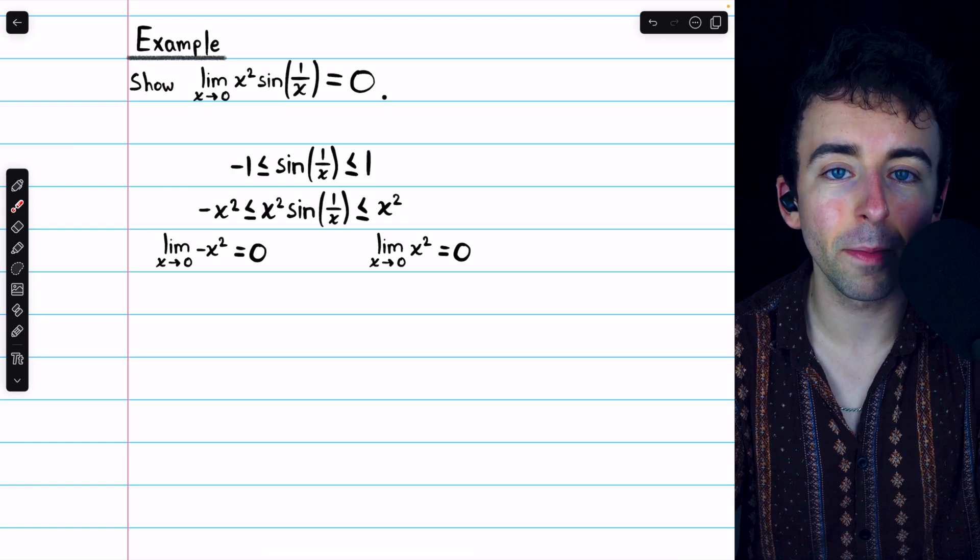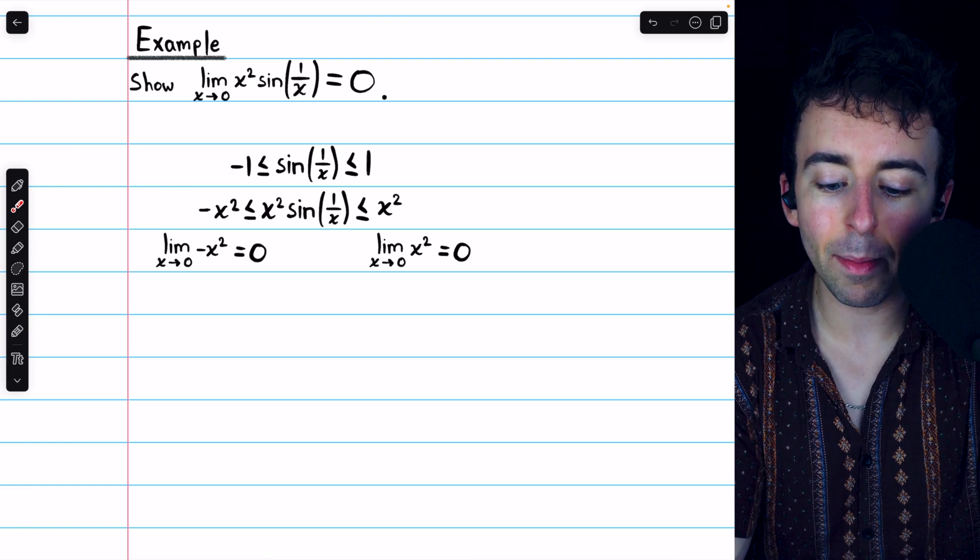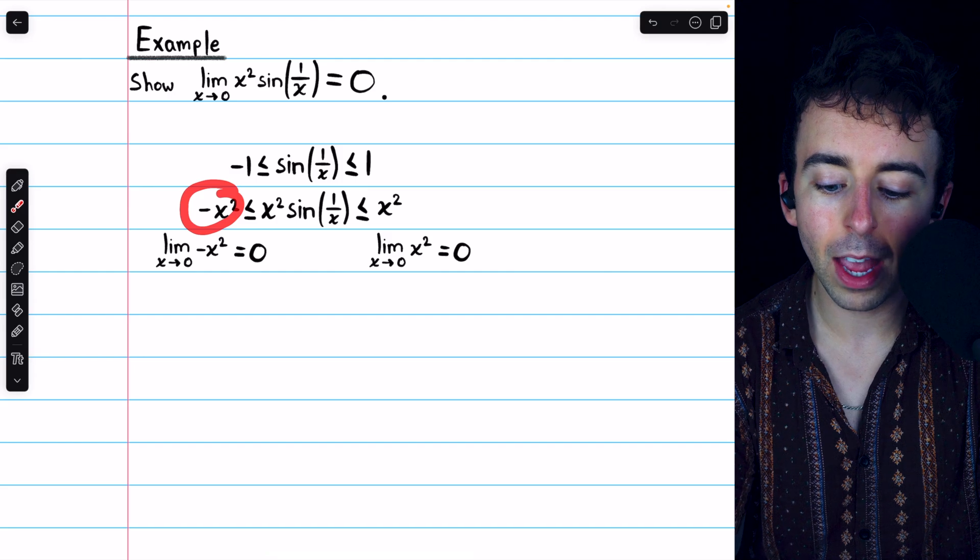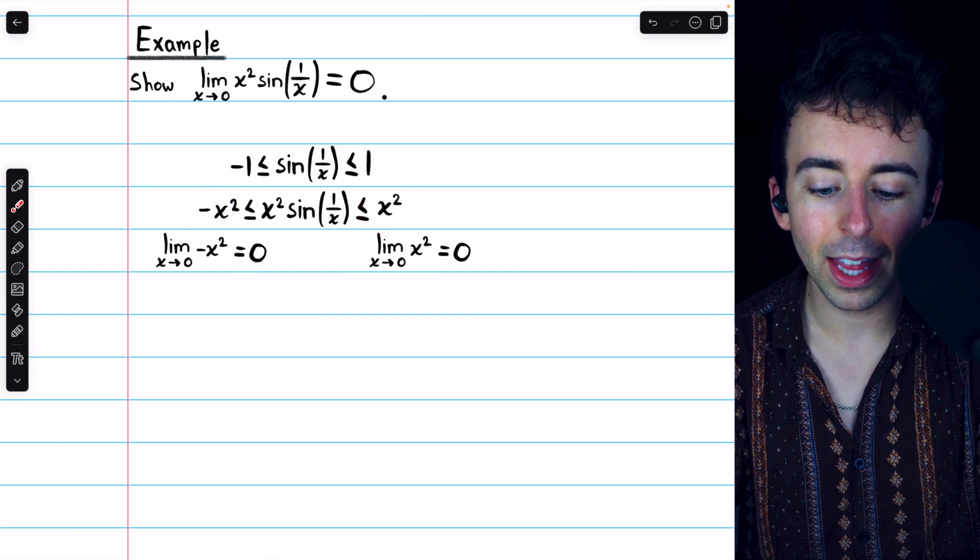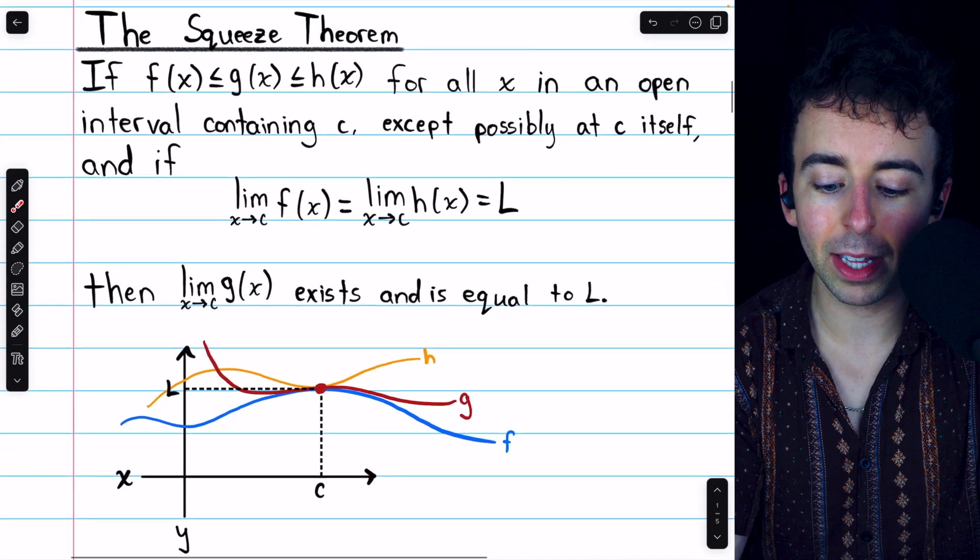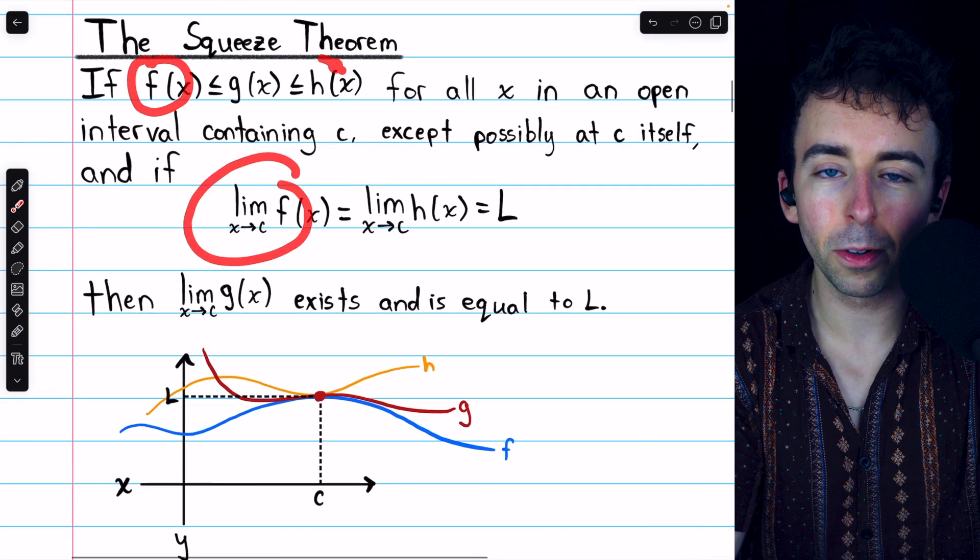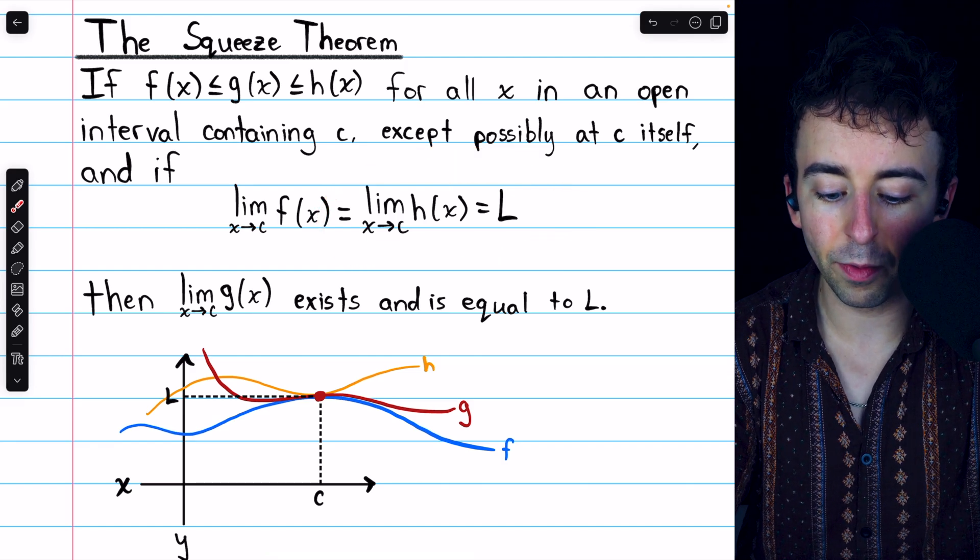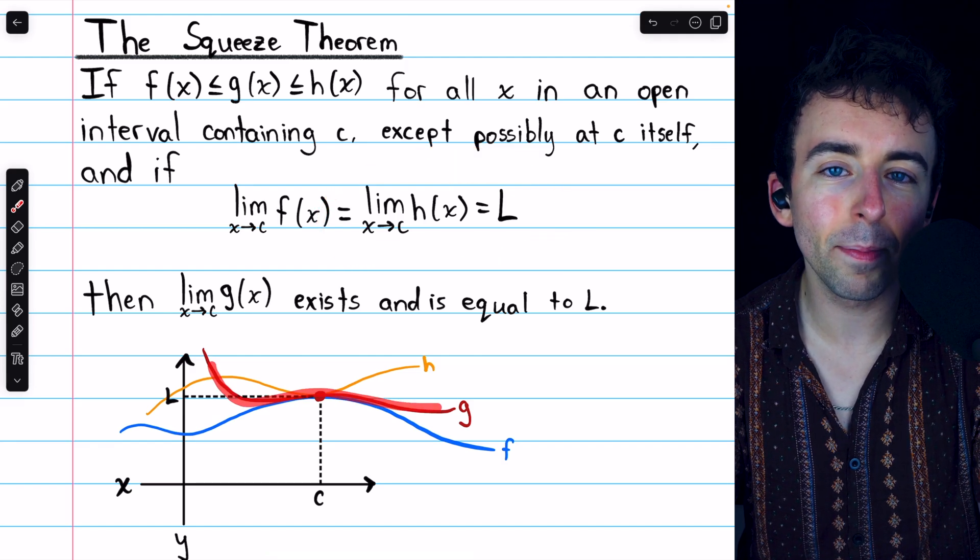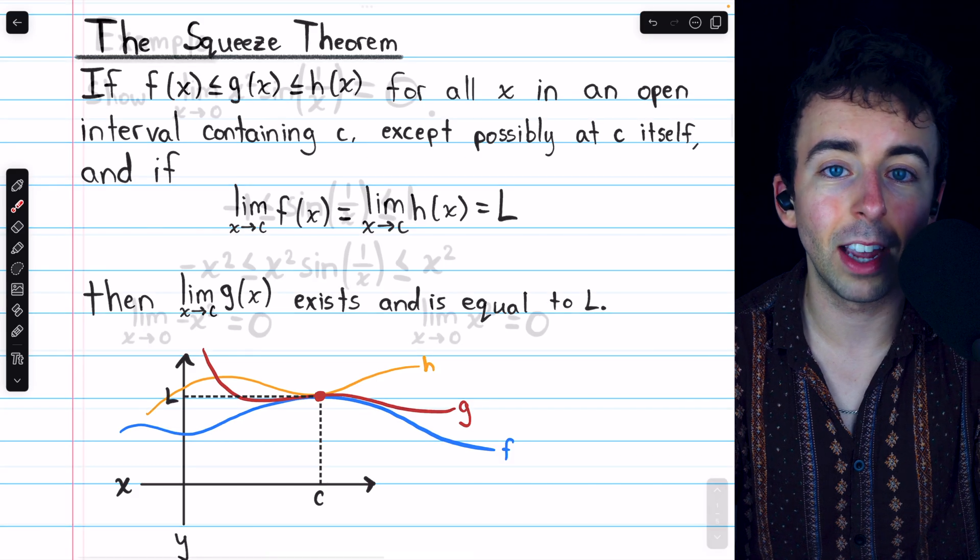So multiplying through by x², we have -x² on the left, positive x² on the right, and in the middle, of course, is x² times sin(1/x), precisely the function whose limit we're trying to evaluate. Then, as per the squeeze theorem, we have to check that the limits of the lower function and the upper function exist and are equal.